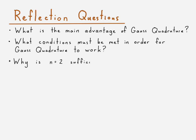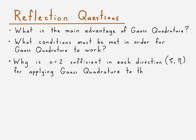And why is N equal to 2 sufficient in each direction for applying Gauss quadrature? And finally.